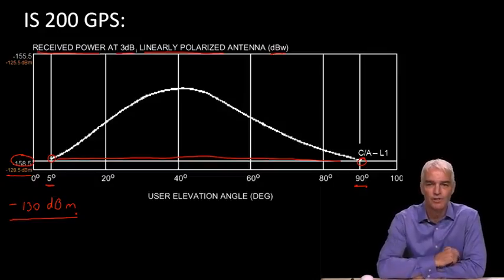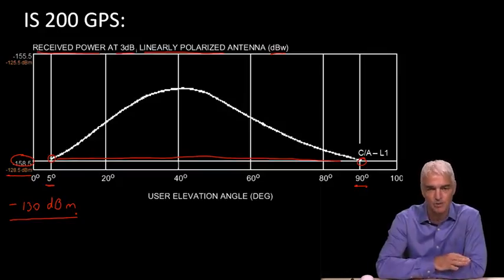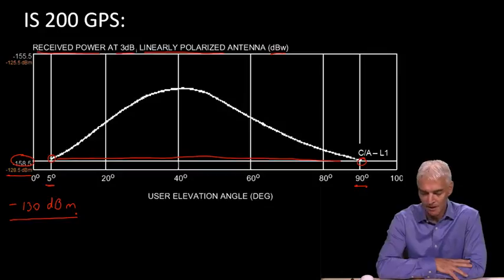Also, remember, this is the minimum guaranteed signal strength when you're outdoors. And when the satellites are newer, the signals tend to be stronger. And as their batteries age, the signals get a bit weaker. So often you will see numbers slightly higher than this by a couple of dBs.